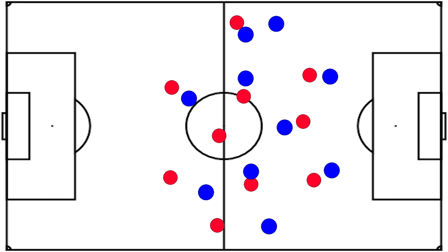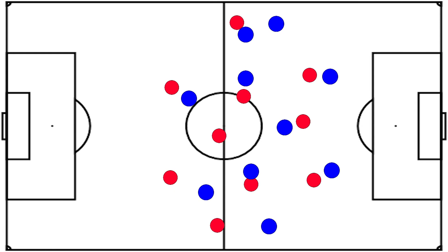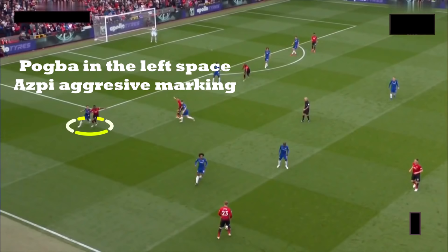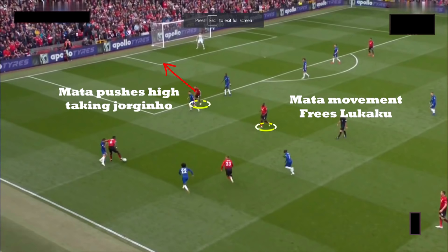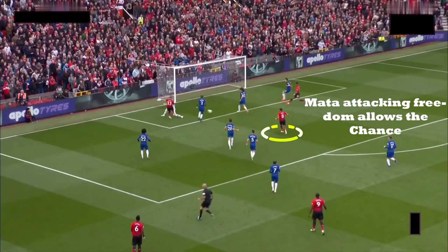When they were under constant pressure, Chelsea would drop into a 4-5-1, but United would look to use quick passes before Chelsea could regain their shape. Ole's tactics are exactly the reason why they scored. You can see Pogba occupying the left channel, with Azpilicueta aggressively marking him. Mata uses the space between the lines, moving backwards and taking Jorginho with him. This gives Lukaku space in the pocket to turn, and Luke Shaw uses the space behind Azpilicueta to make a run. Mata, in his attacking role, then gets on the end of it.